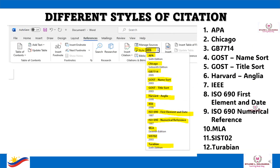The following are the different citation styles available: APA, Chicago, GB7714, GOST Name Sort, GOST Title Sort, Harvard Anglia, IEEE, ISO 690 First Element and Date, ISO 690 Numerical Reference, MLA, SIST 02, and Turabian style citation.